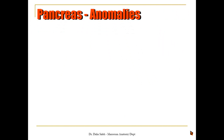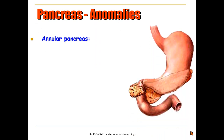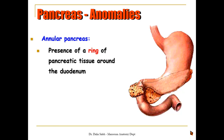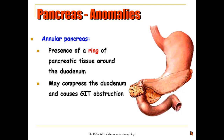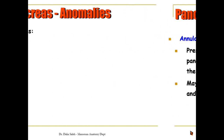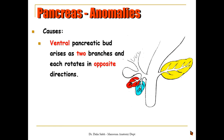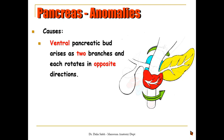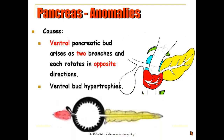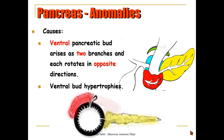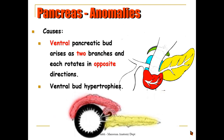Regarding anomalies of the pancreas, we can have what's called the annular pancreas, or ring-shaped pancreas. In this anomaly, there is a ring of pancreatic tissue that surrounds the duodenum and may compress it, causing GIT obstruction. The cause is probably that the ventral pancreatic bud arises as two branches instead of one, and each branch rotates in opposite directions, ending up with a ring surrounding the duodenum. Another explanation is that the ventral bud arises as one but hypertrophies and is fixed in place, growing to reach the dorsal bud, thus forming the ring around the duodenum.